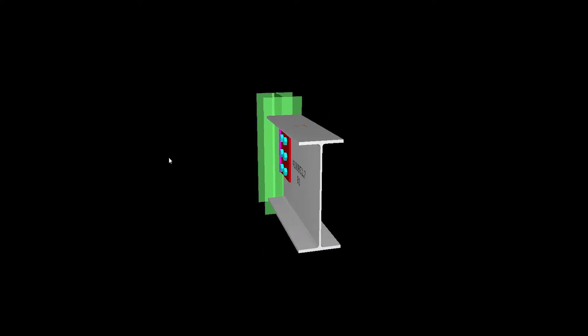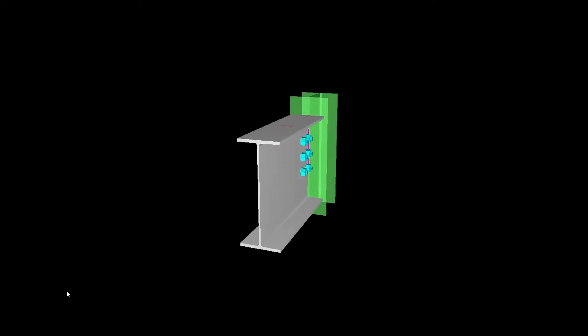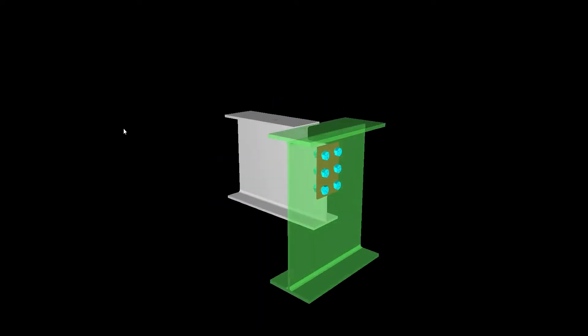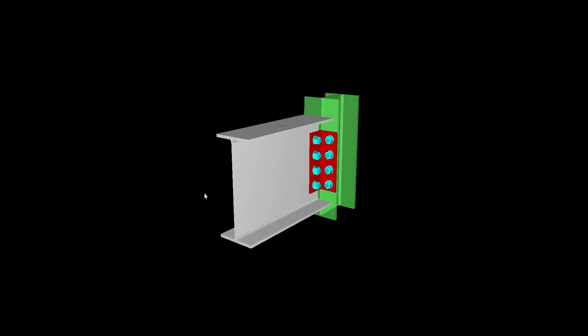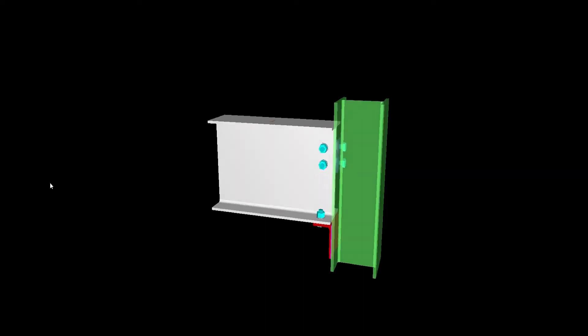I'm going to walk you through a couple of examples of shear connections as well as moment connections. Let's start with shear connections. This is a clip plate welded to the flange of the column and bolted to the web of the beam. This one is a beam-to-beam connection. You can have an angle bolted to the flange of the column and bolted to the web of the beam. You can also have a welded angle seat with bolts to the beam.